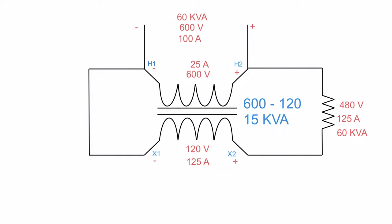This is what we call a buck connection. We say it's bucking because this voltage bucks — pushes against — that voltage to produce the output voltage. In reality, one flux is pushing against the other flux to give us this voltage, but that will be discussed more in a later video. Some like to say it's bucking flux.